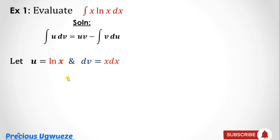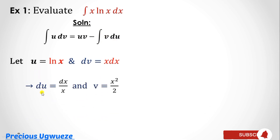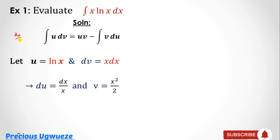Once you have made this choice, find du and v. To find du, differentiate u with respect to x. Differentiating ln(x) gives 1/x, so du/dx = 1/x. Cross-multiplying gives du = dx/x. To find v, just integrate dv.